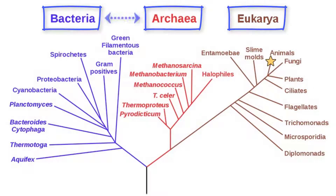Both the bacteria and archaea domains consist of organisms made of prokaryotic cells that do not have a true nucleus. There are structural and biochemical differences that separate these two domains despite their similarities. The third domain is eukarya, and this domain consists of all eukaryotic cells that are larger, much more complex, and have a true nucleus, which includes any type of plant, animal, or fungus.